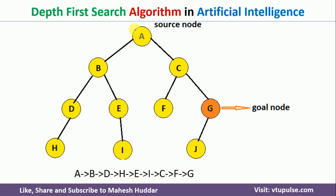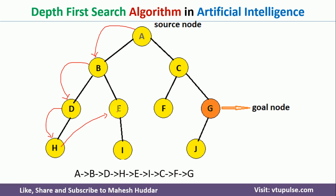We start at A, then go to the left subtree at B. From B, we go to the left subtree again at D, since B is not the goal node. From D, we go to H. At H, there are no further nodes, so we backtrack. D has no right subtree, so we go back to B, which has a right subtree at E. From E we go to I. Still not at the goal node, so we go back to A and take the right subtree to C. From C we go to F, and from F we reach G — the goal node — so we stop. This is how the DFS algorithm works.